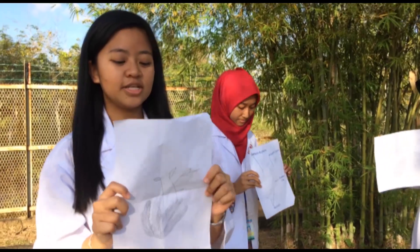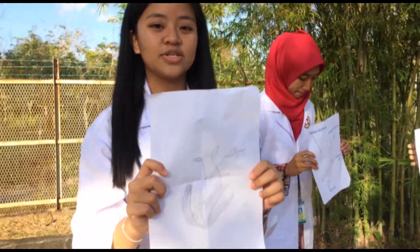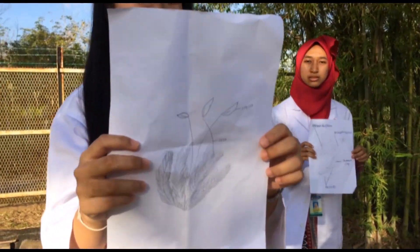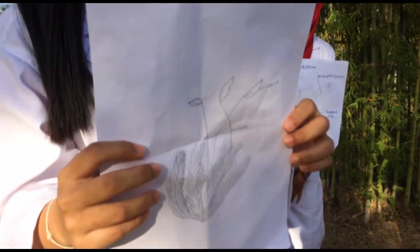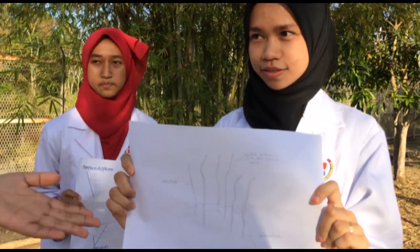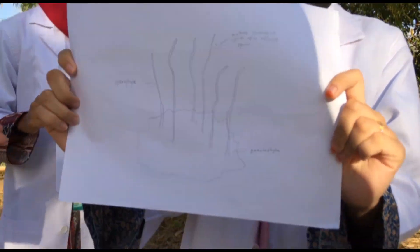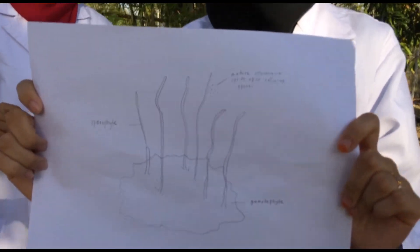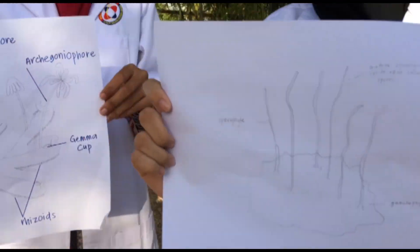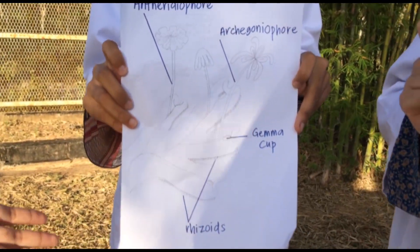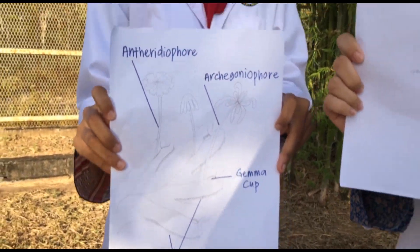To present about one of the classes from Kingdom Plantae, which is Bryophyta. This is Polytrichum species from Phylum Bryophyta. And this is Anthoceros species from Phylum Anthocerophyta. And the last one is Marchantia species from Phylum Hepatophyta.